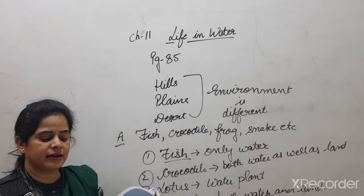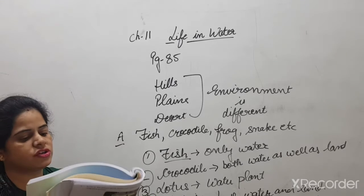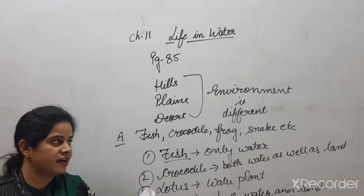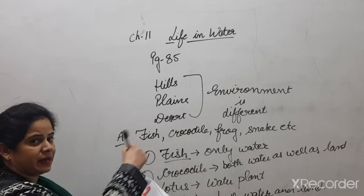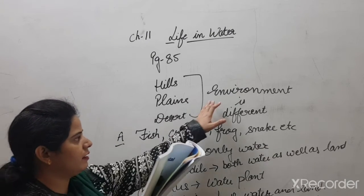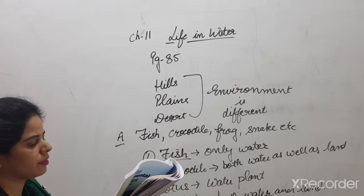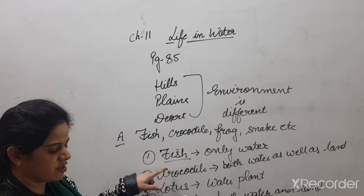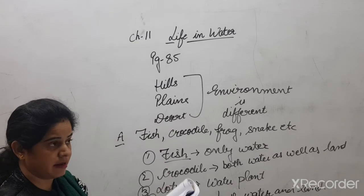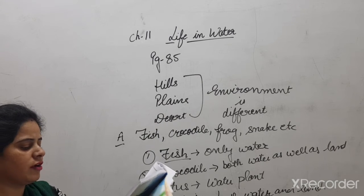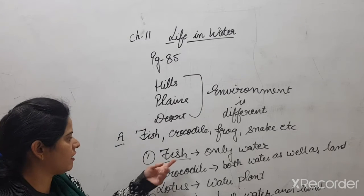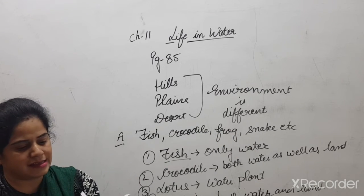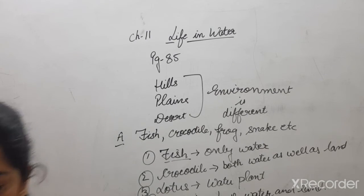So we have many types of animals and plants. Some live in water and some on land. Some plants and animals are found in hilly areas, some on plains, and some in desert, and their environments are all different from each other. We saw four pictures: fish, crocodile, lotus plant, and tortoise, and were asked which animals these are and where they are found.